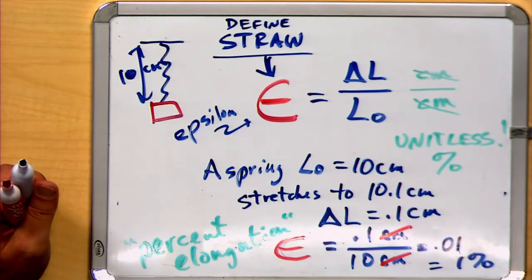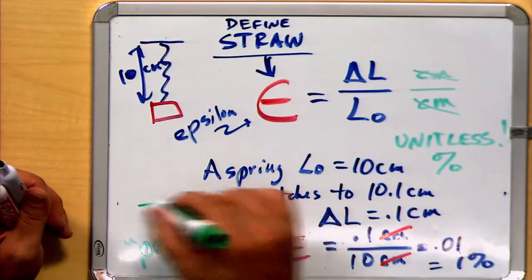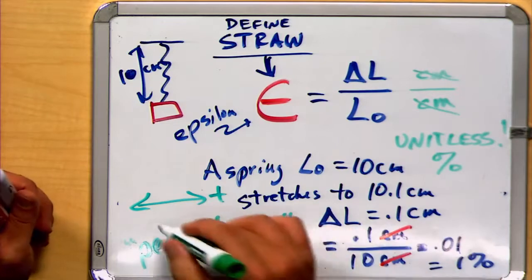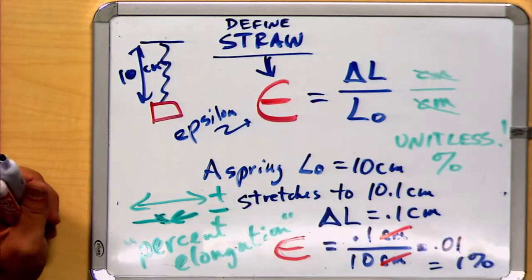Our usual convention for strain is the same as the convention for stress. Generally, if we're stretching something, that's considered to be positive strain. And if we're compressing something, that's considered to be negative strain.